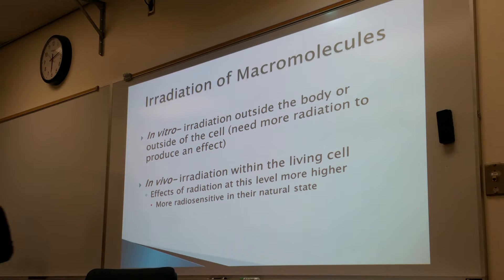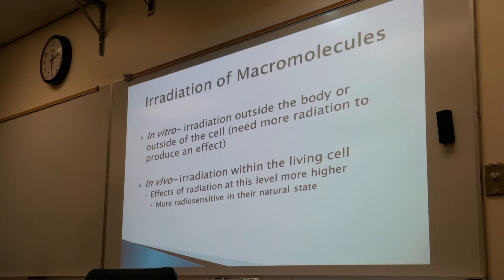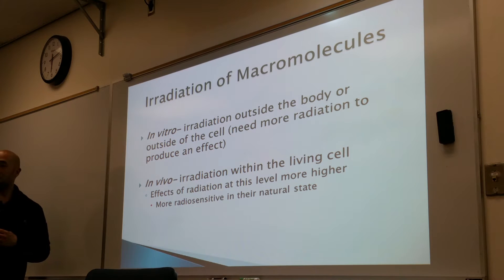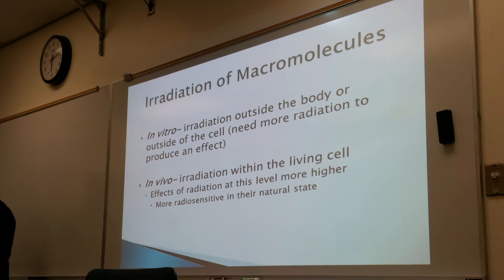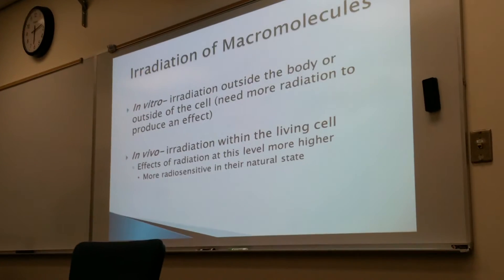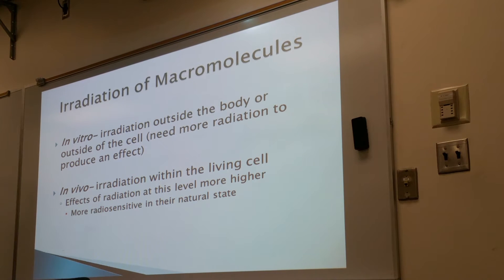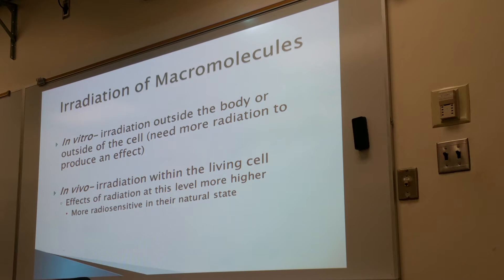Scientists and researchers have done different types of experiments on these macromolecules outside of the body. They've taken these different types of macromolecules, put them in a solution, and observed what happened when they were irradiated. This is known as in vitro — irradiation outside the body or outside the cell. More radiation is needed to produce an effect because it must penetrate the solution before it strikes the DNA.